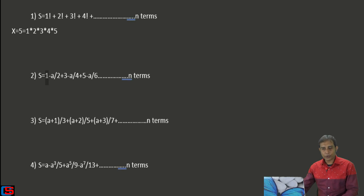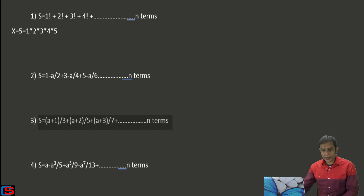Now we come to the next series program. In this series program you can see: S = (a+1)/3 + (a+2)/5 + (a+3)/7 ... up to n terms.